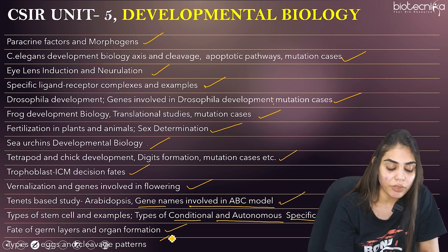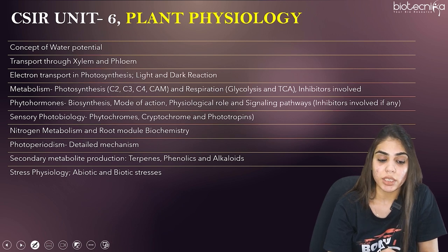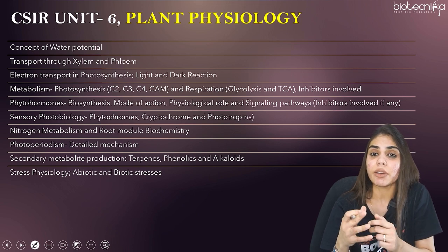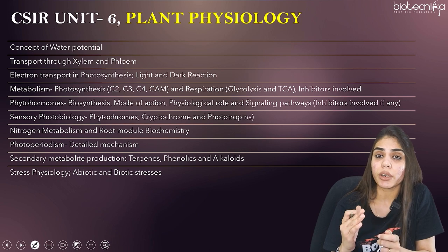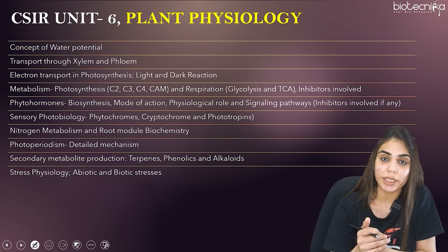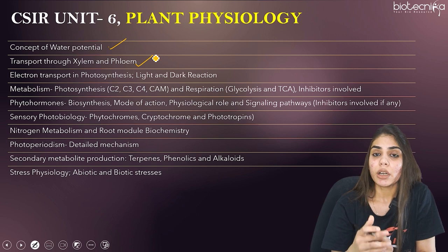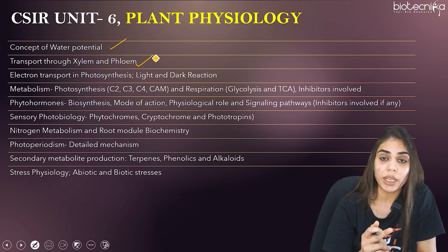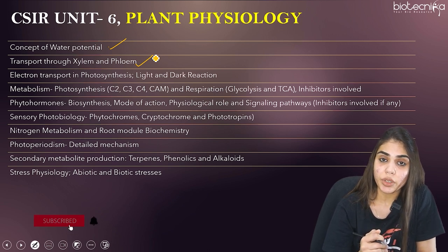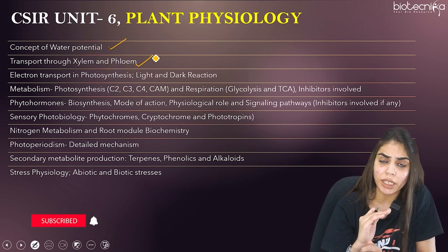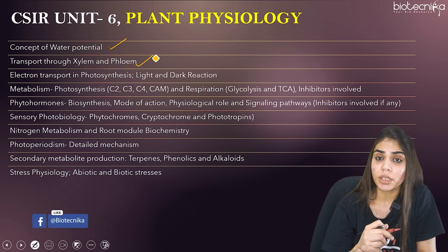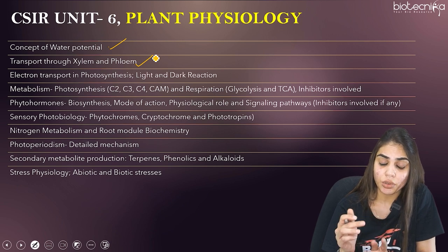Coming to Unit 6, Plant Physiology. Focus on the concept of plant water potential — you will be given numericals to calculate the final answer and the flow of water from one cell to the next. Know the formula for water potential. Also cover transport through xylem and phloem — the apoplastic and symplastic pathways. The third important topic is electron transport in photosynthesis — know the detailed mechanism, how light and dark reactions differ, and how the Calvin-Benson cycle takes place.